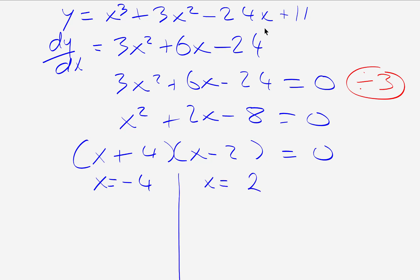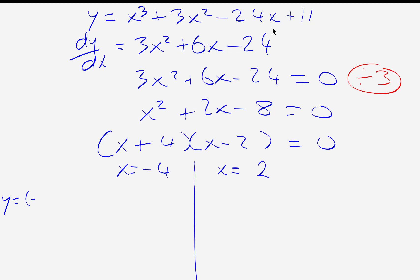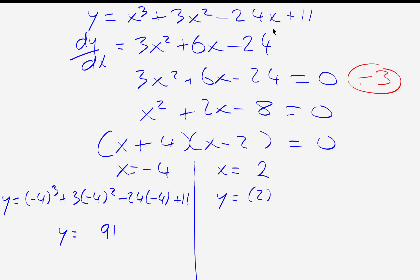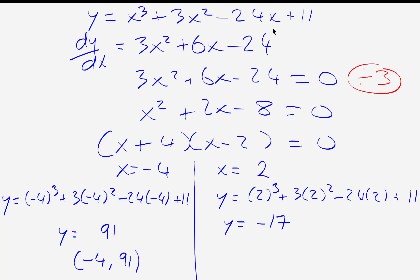Now substitute back into the original function to find the corresponding y-values. When x = −4: y = (−4)³ + 3(−4)² − 24(−4) + 11 = 91. When x = 2: y = 2³ + 3(2)² − 24(2) + 11 = −17. So our two turning points are (−4, 91) and (2, −17).